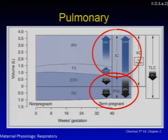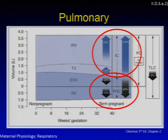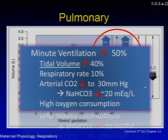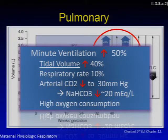There are pulmonary changes as well. By term pregnancy, FRC goes down by 20%, and ERV and residual volume go down by 25% and 15% respectively. At the same time, inspiratory capacity goes up by 15%, and IRV and tidal volume go up by 5% and 45% respectively. This translates to essentially no change in vital capacity during term pregnancy. Minute ventilation goes up by 50%, with tidal volume — increased by 40% — being the primary component.